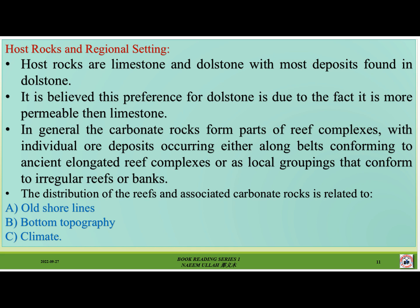Host rocks are limestone and dolostone, with most deposits found in dolostone. It is believed this preference for dolostone is due to the fact that it is more permeable than limestone. In general, the carbonate rocks form parts of reef complexes, with individual ore deposits occurring either along belts conforming to ancient elongated reef complexes or as local groupings conforming to irregular reefs or banks. The distribution of reefs and associated carbonate rocks is related to ancient shorelines, bottom topography, and climate.